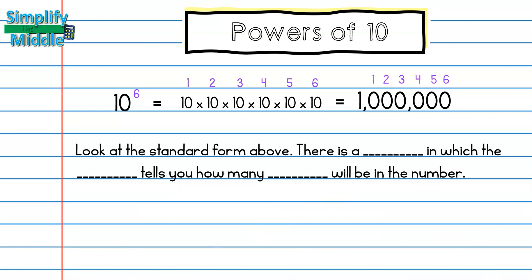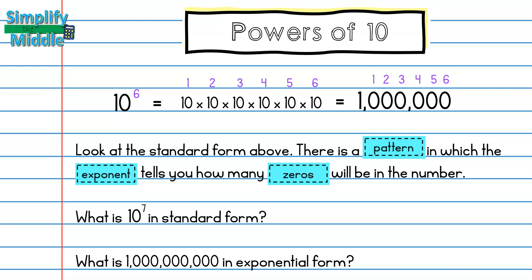Let's recap. Look at the standard form above. There is a pattern in which the exponent tells you how many 0s will be in the number. Feel free to pause the video at this time, and play again when you're ready, to try out these two examples.